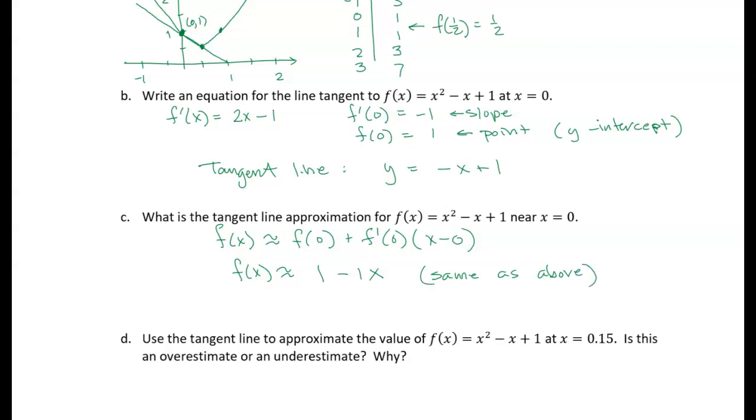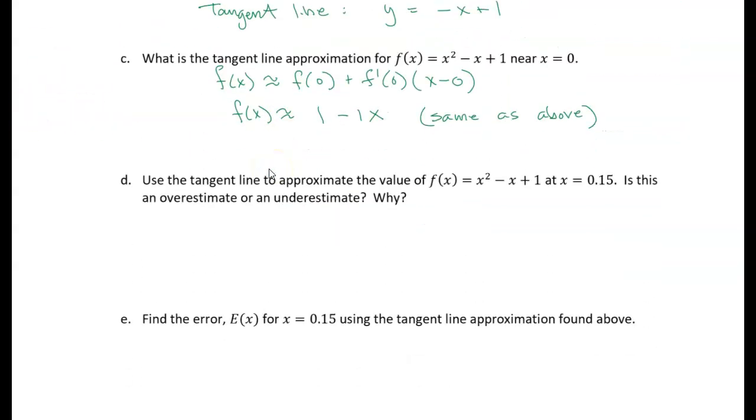And then part D is asking us to use the tangent line approximation to approximate the value of f of x at x equals 0.15. And then we're also asked to determine whether that's an over or an underestimate. We're going to use the tangent line approximation. So I'm going to put the value 0.15 into x. But I'm putting it into the tangent line approximation. So it's basically one minus x. So I get one minus 0.15. And that is 0.85.